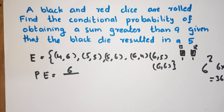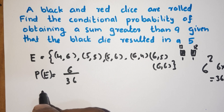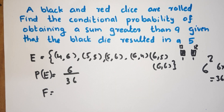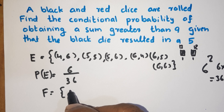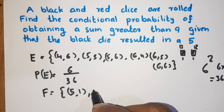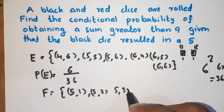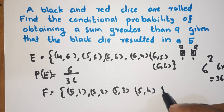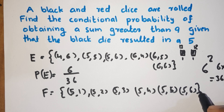Total outcomes. That's the black die result. That's red. 5 and 6 — this is the black die 5.